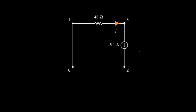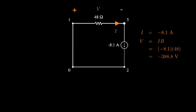To apply Ohm's law to this circuit, we begin by labeling the current flowing from left to right through the resistor as I, and the voltage drop from left to right as V. Now the current we've labeled as I has the same reference direction as the current source, so its value is the same as the source value, which is negative 8.1 amps. Next, we can use Ohm's law to describe the voltage drop across the resistor, which is the product of the resistance times the current flow in the direction of the voltage drop. The resistance is 48 ohms, and the current from left to right is negative 8.1 amps, so the voltage drop from left to right is negative 388.8 volts.